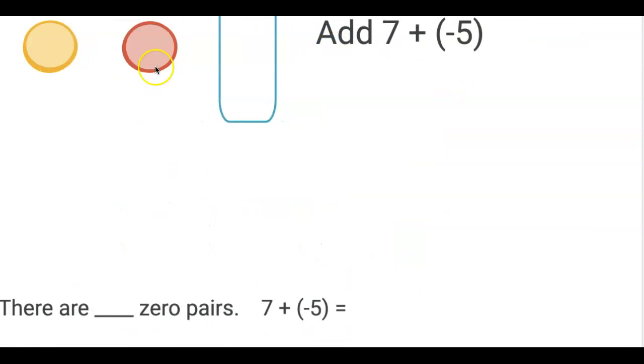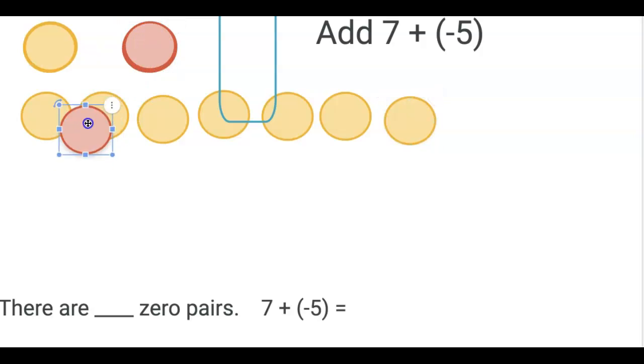So this is what it would look like: Add 7 + (-5). They're going to add seven of the yellow chips, and then they're going to add five negative.